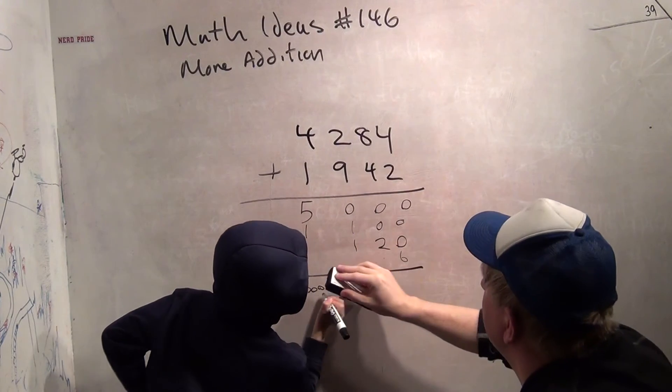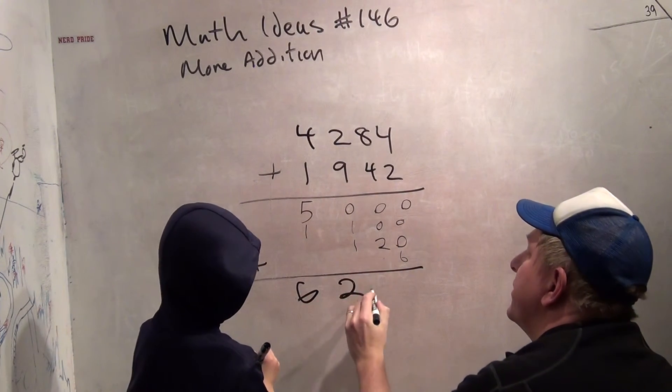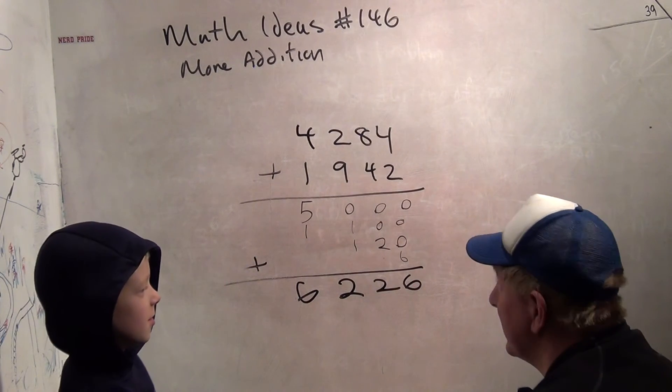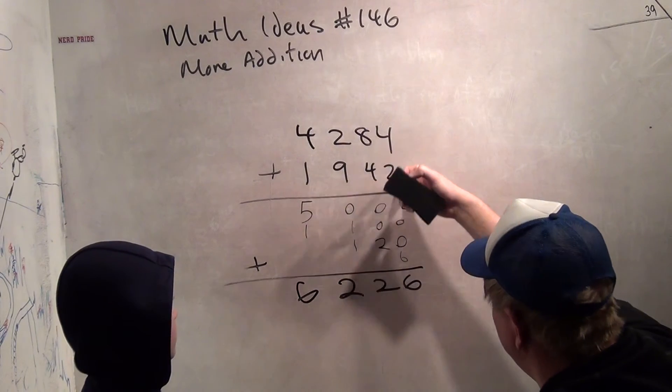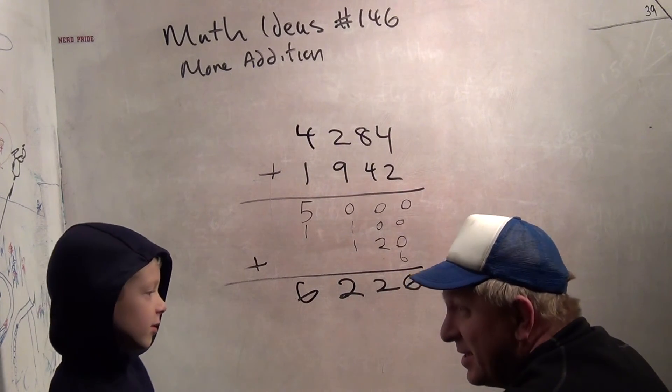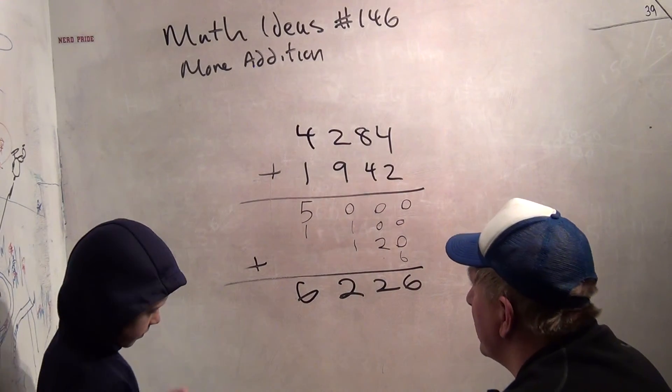What's 100 plus 100? 200. 6,226. Whoa. You did it. 6,226. Is that the first time you ever added two four-digit numbers together? I think so. Wow. That was pretty good.